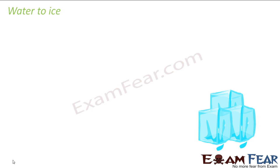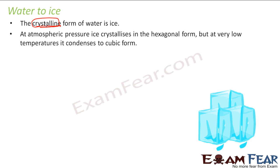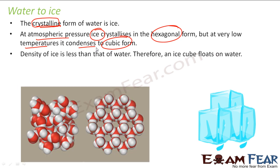Now let us understand water converting to ice. Ice is the crystalline form of water. At atmospheric pressure, ice crystallizes into a hexagonal form. At very low temperatures, it condenses to a cubic form. You can see the difference — liquid water is just a cluster held together by hydrogen bonds, whereas ice is in a hexagonal crystalline structure.